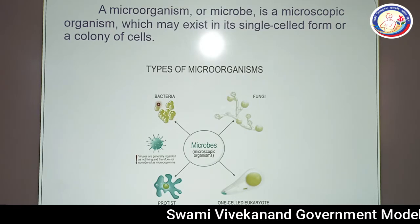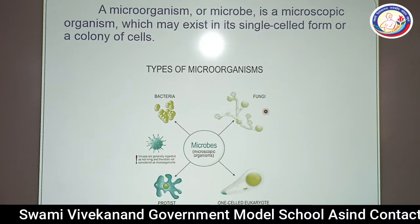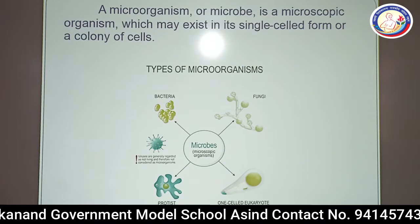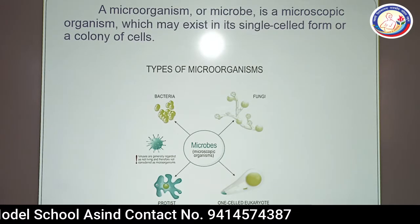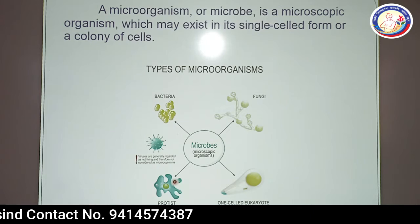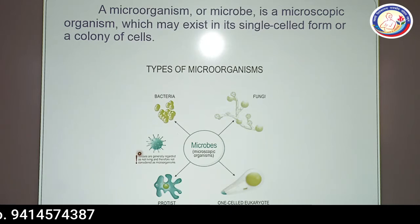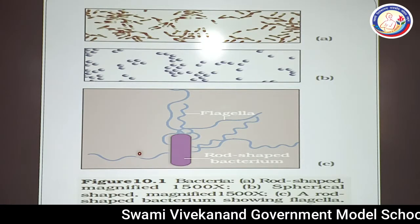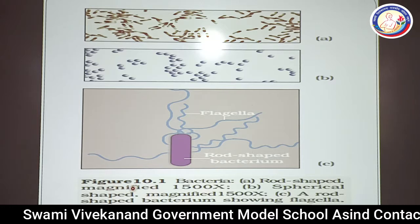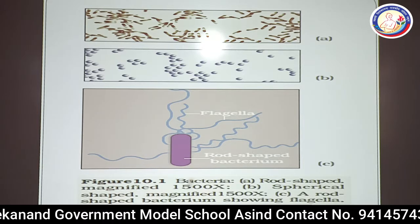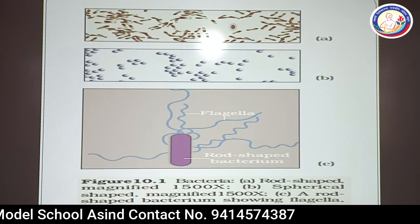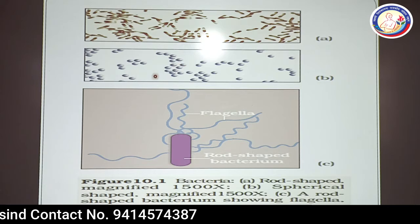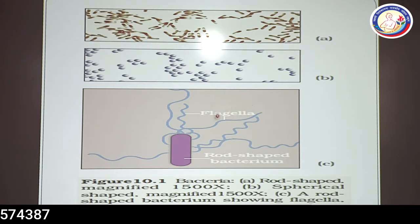The types of microorganisms include bacteria, fungi, single-cell eukaryotes, and viruses — although viruses are the connecting link between living and non-living things. This is Figure 10.1 from the book. These are rod-shaped bacteria, and these are spherical bacteria known as cocci.